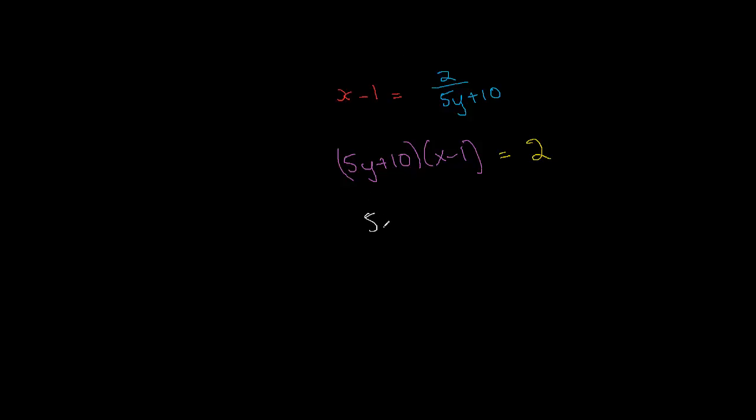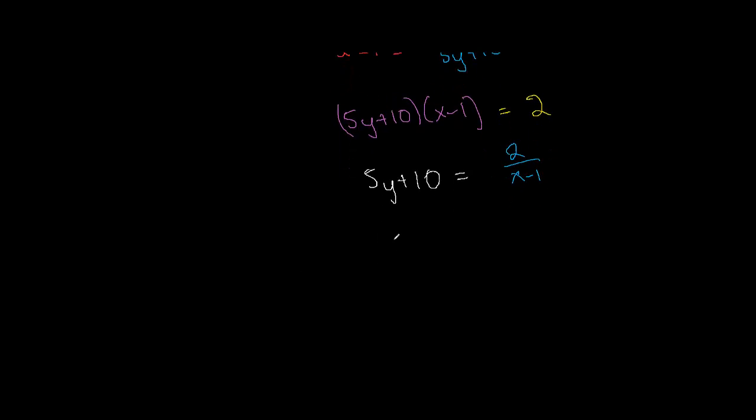So 5y plus 10 equals, so we're going to get 2 over x minus 1 because I've just divided both sides by x minus 1. So we're getting warm to getting this y by itself. Now we're going to minus 10 to both sides. So we're going to get 5y equals 2 over x minus 1, and then we've minus 10 to both sides. So that's cancelled on the left-hand side.